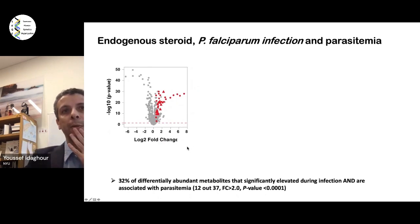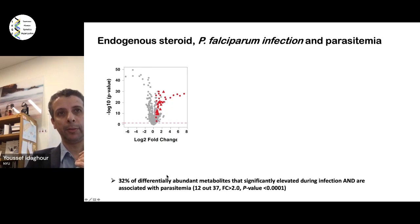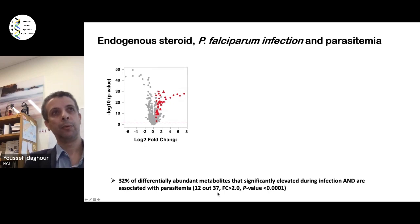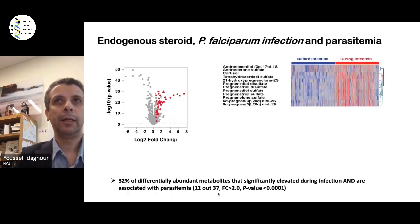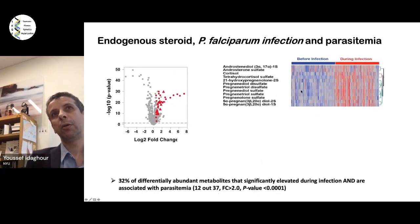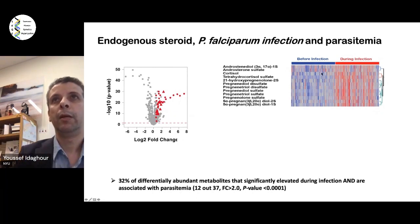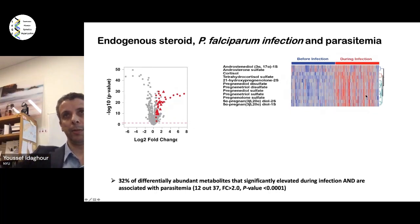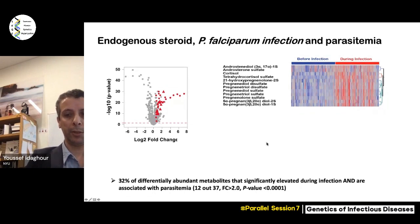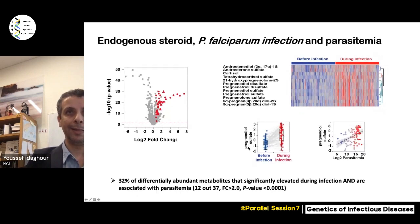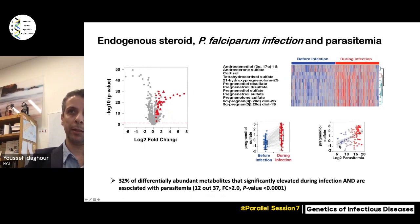When we look at steroids, they are actually the most abundant class of molecules that is differentially abundant. Looking specifically at those associated with parasitemia and elevated, we detected 12 out of 37 in this upregulated and parasitemia-associated class. I'm showing a heatmap where each column is one child — 100 children before infection and the same 100 children after — and there is perfect clustering based on infection status. All of these steroids are going up after infection. I'm showing an example of a steroid called pregnenolone sulfate, which clearly goes up after infection and is associated with parasitemia.